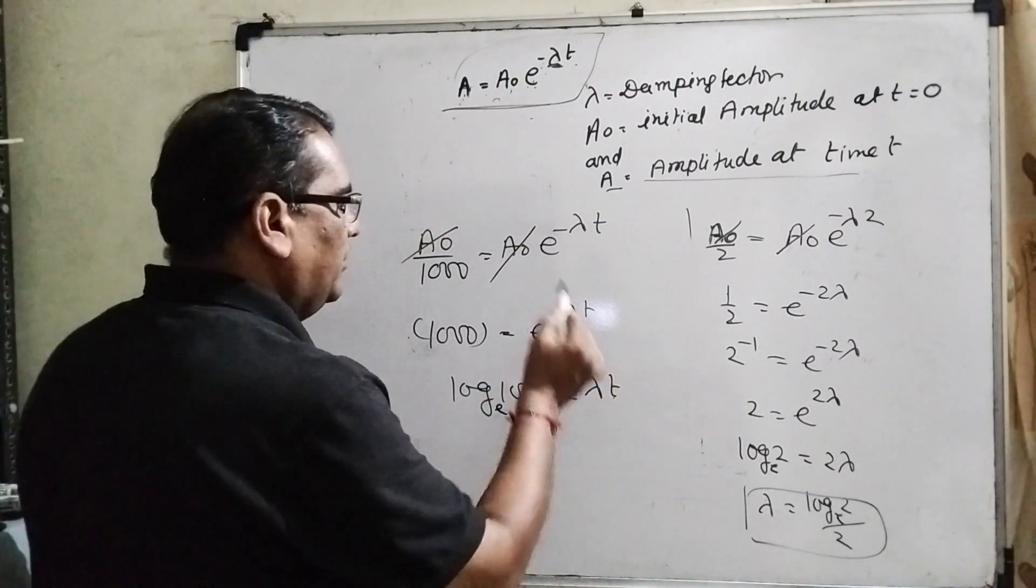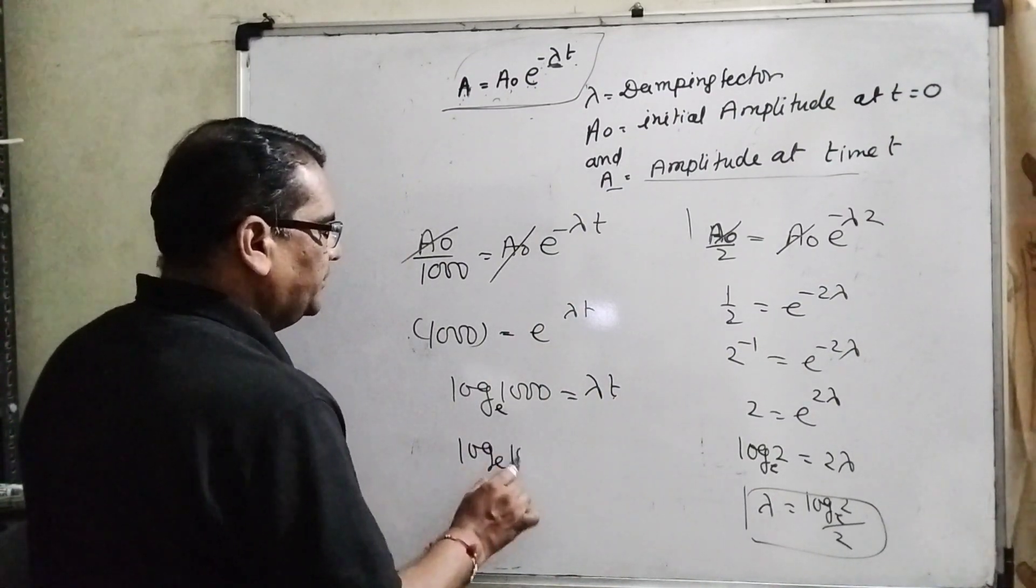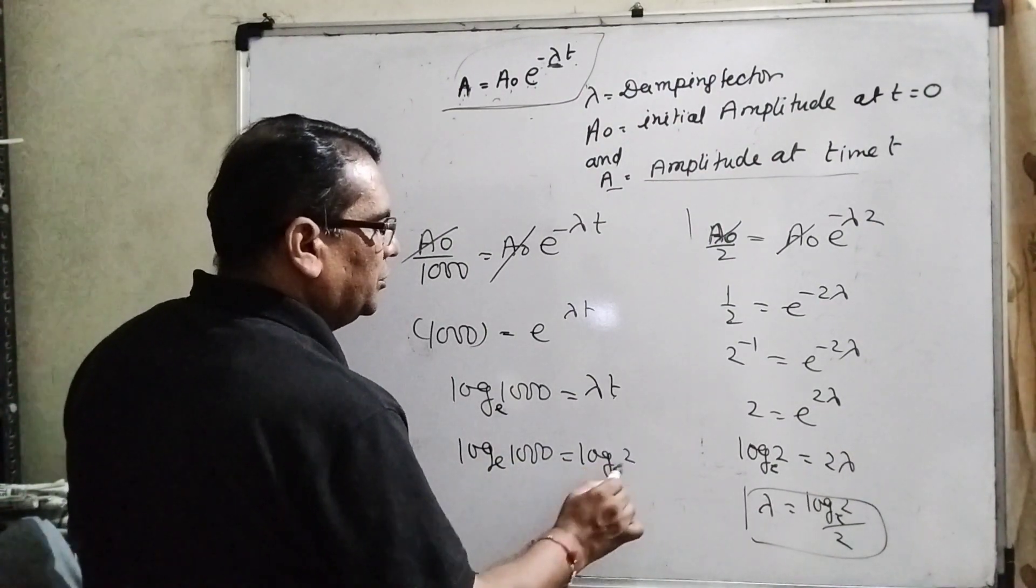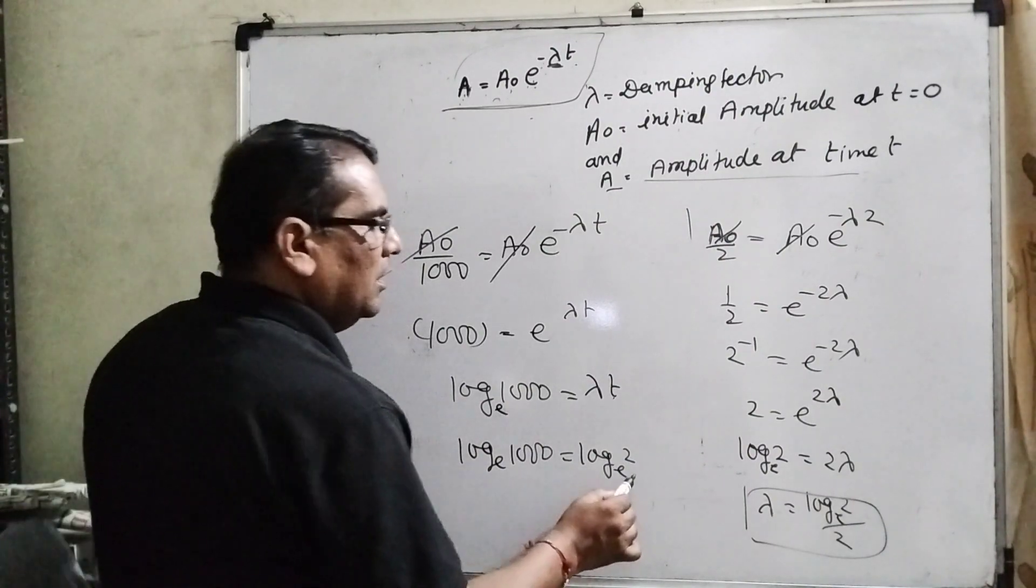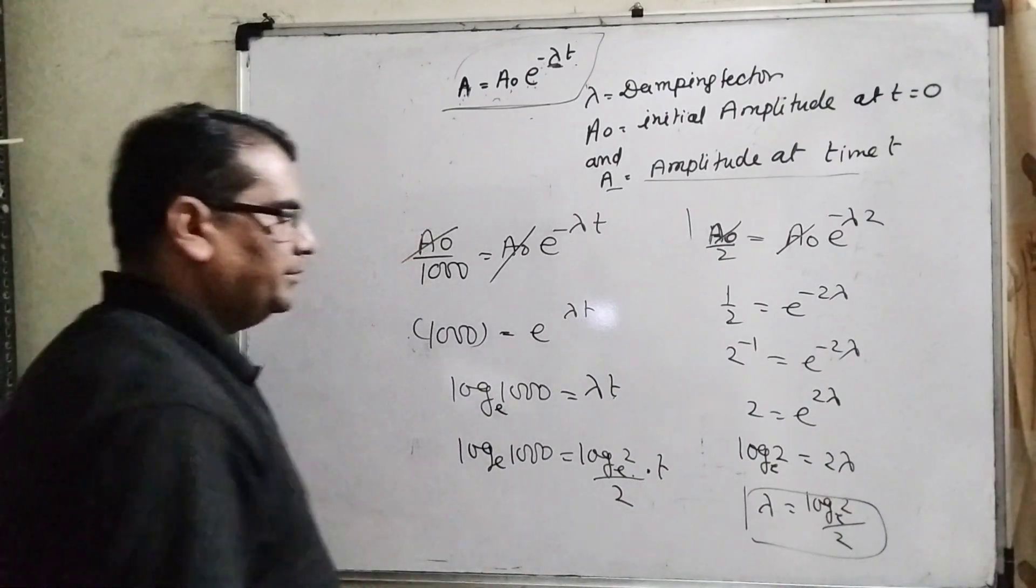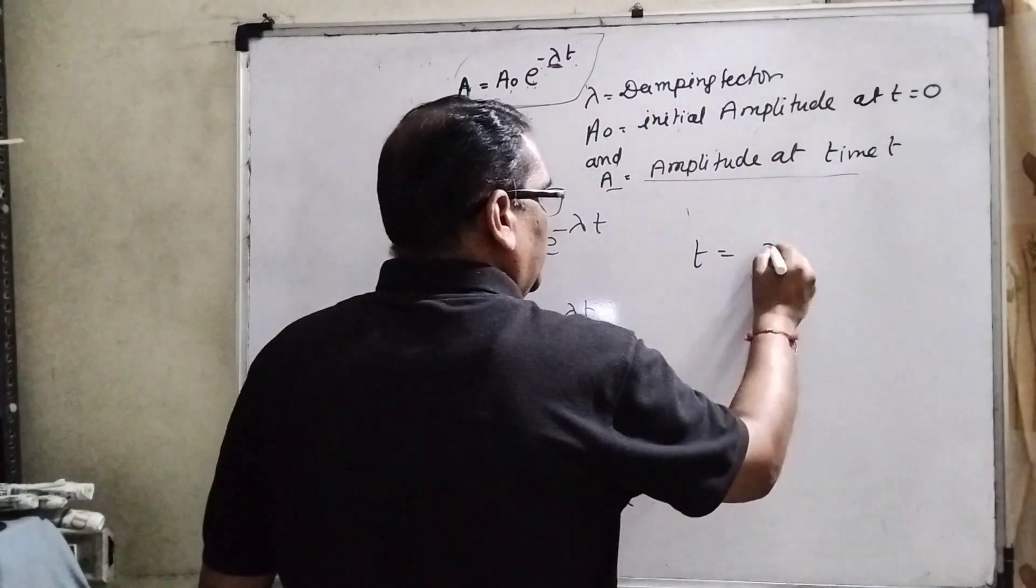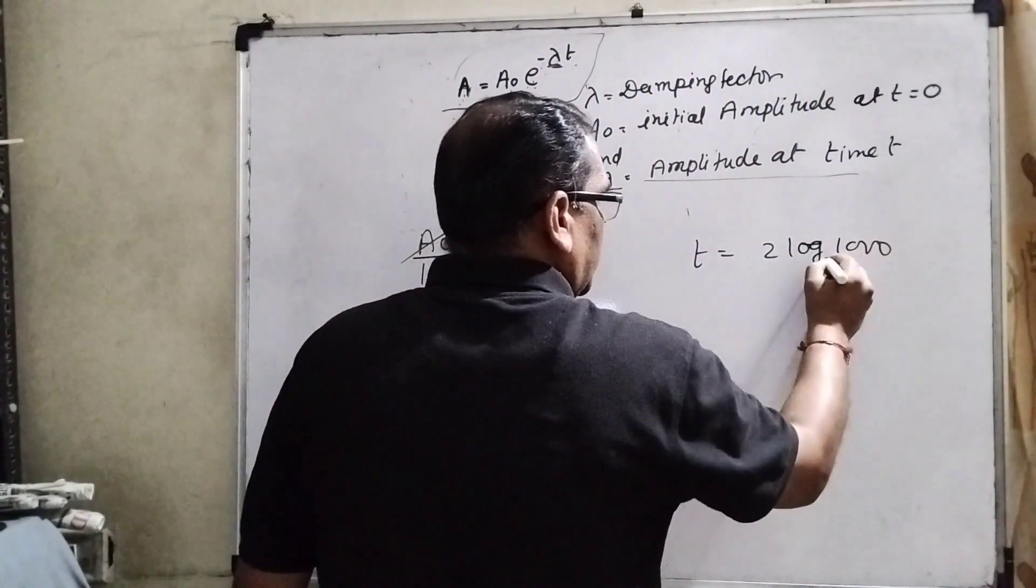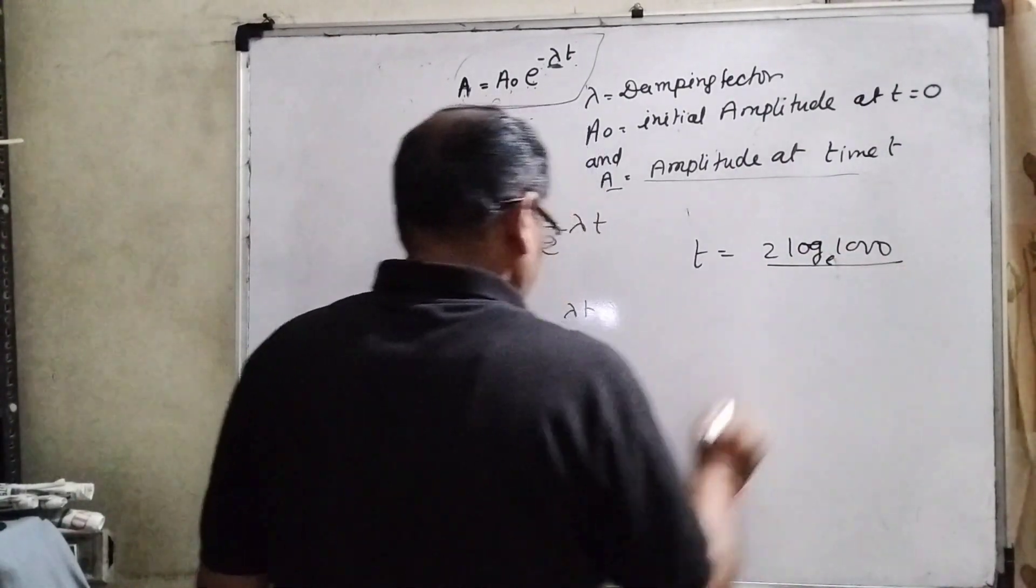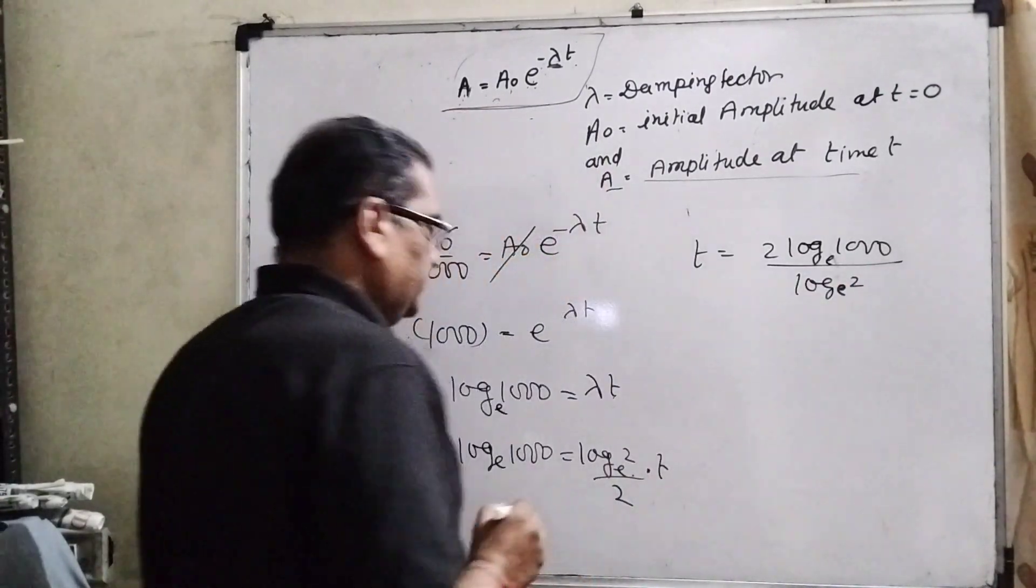Here we have to find out the t, and lambda we have already found out. Now substitute the value of lambda. What is the lambda? Log 2 to the base e upon 2, and it is t. Now it can be written as t equals 2 log 1000 to the base e upon log 2 to the base e.